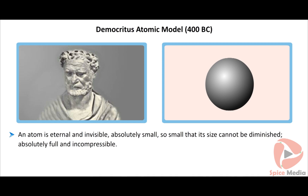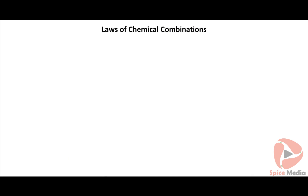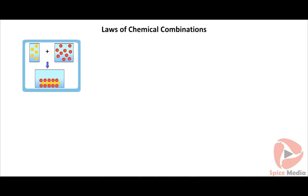Democritus described atoms as absolutely small — so small that their size cannot be diminished — absolutely full and incompressible, without pores, and entirely filling the space they occupy. Unfortunately, Democritus had no experimental evidence.